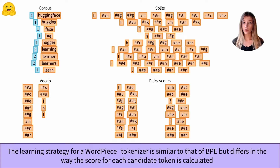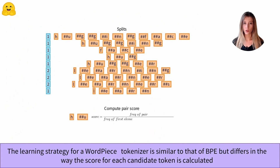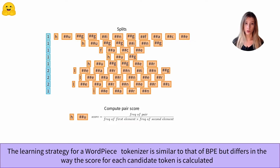Taking, for example, the first pair composed of the letters H and U: the score of a pair is simply equal to the frequency of appearance of the pair divided by the product of the frequency of appearance of the first token by the frequency of appearance of the second token.